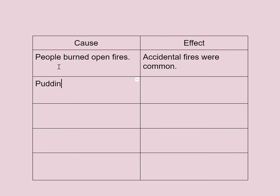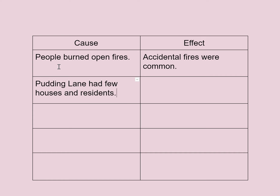Then we learned that because Pudding Lane had few houses and residents — it was mostly businesses — at night those businesses would be empty. So because of that, the fire spread quickly because there was nobody there to realize there was a fire and no one there to start putting it out.